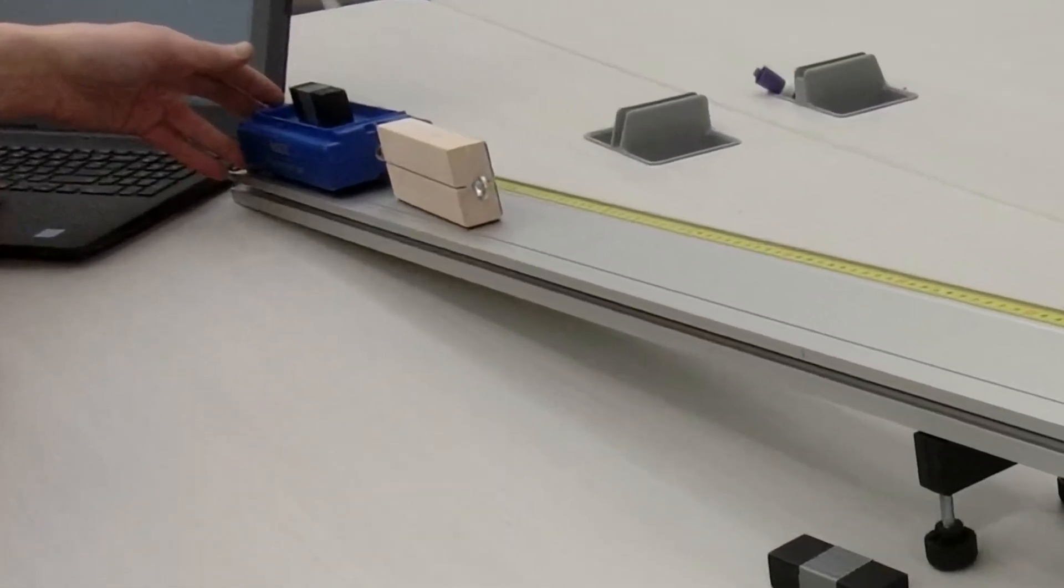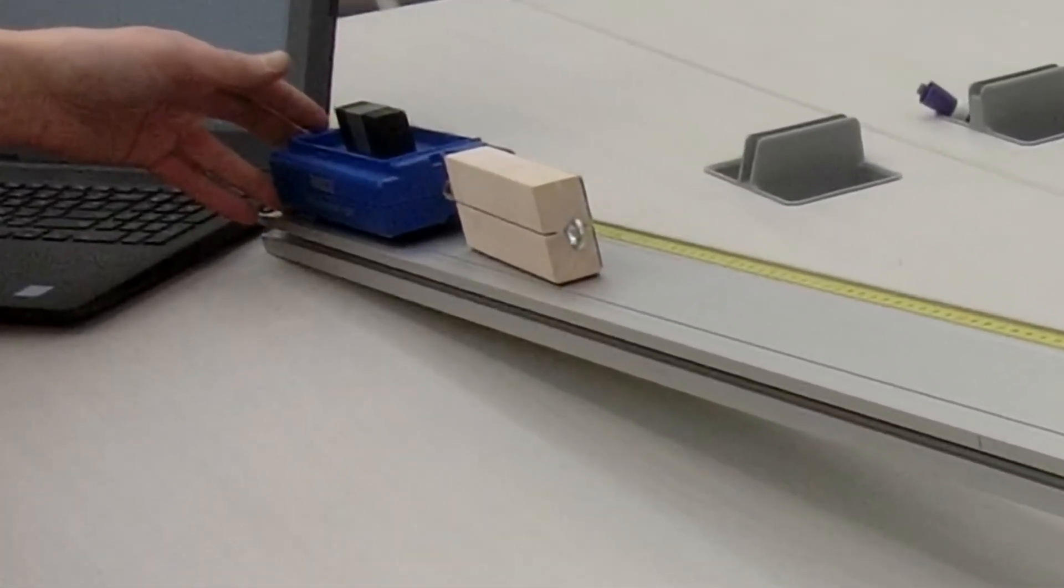The cart drags this wooden block, which has some felt padding that creates a kinetic frictional force that resists the force of gravity pulling the cart down the ramp.